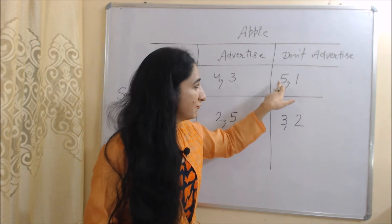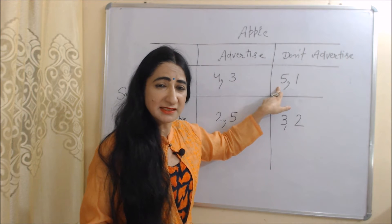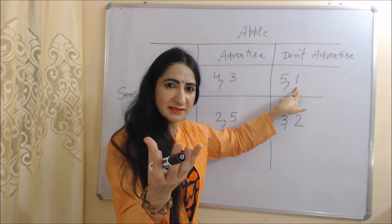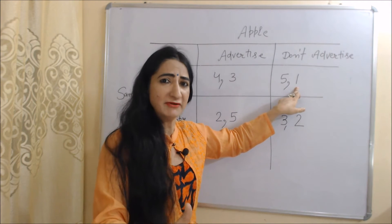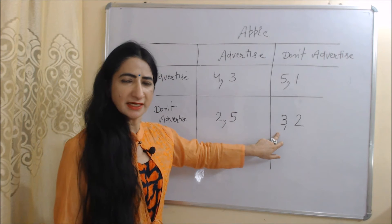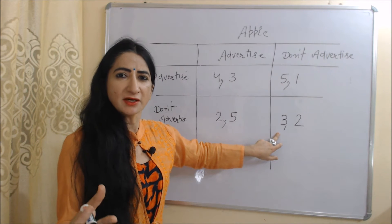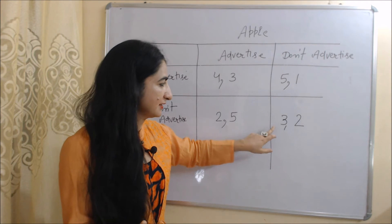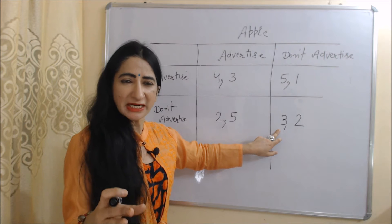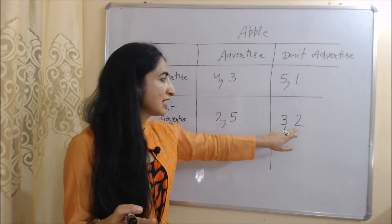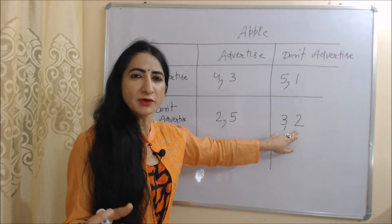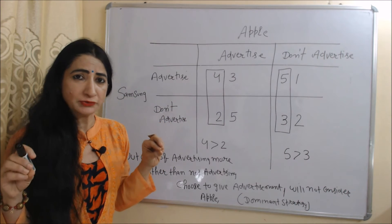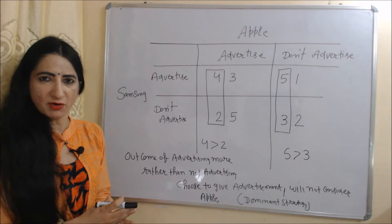In the third case, only Samsung advertises but Apple does not. Samsung receives an outcome of 5 and Apple receives an outcome of 1. In the fourth case, neither company advertises. Samsung receives an outcome of 3 and Apple receives an outcome of 2.